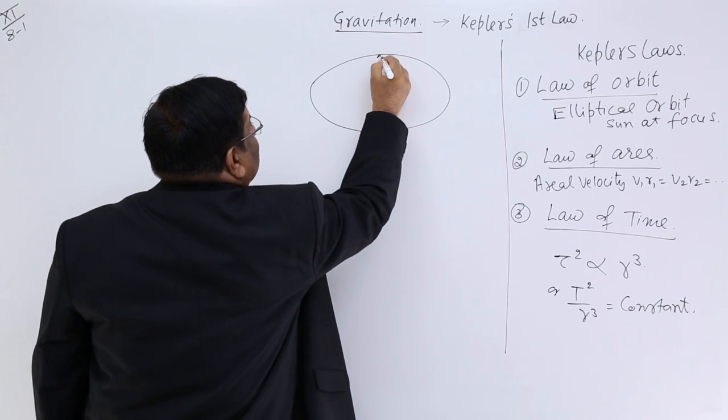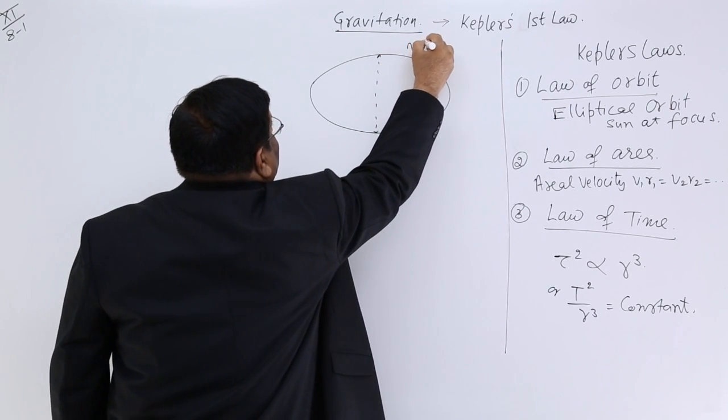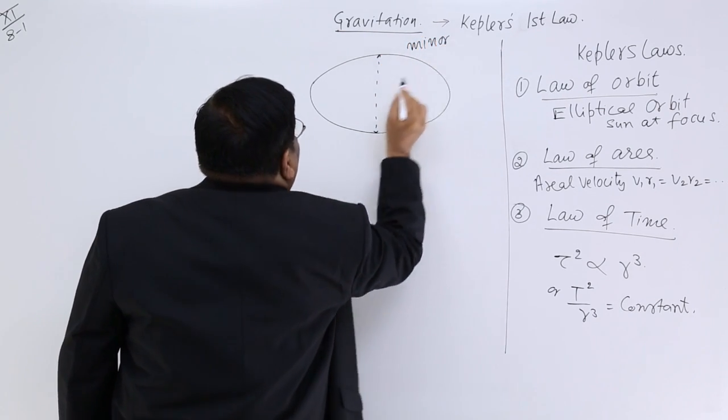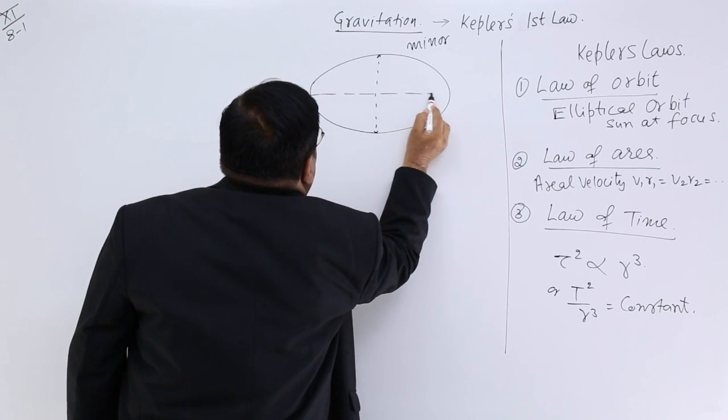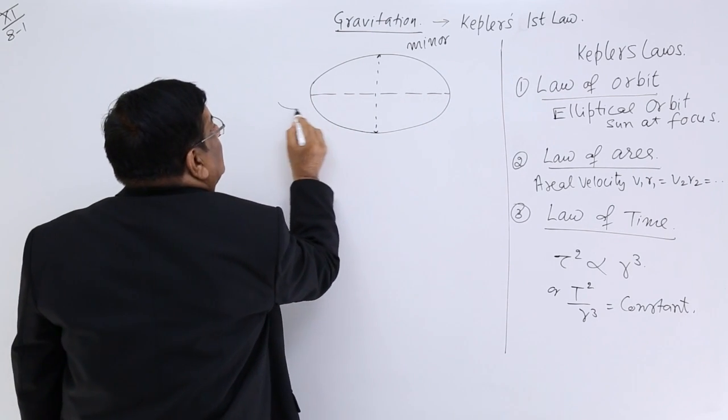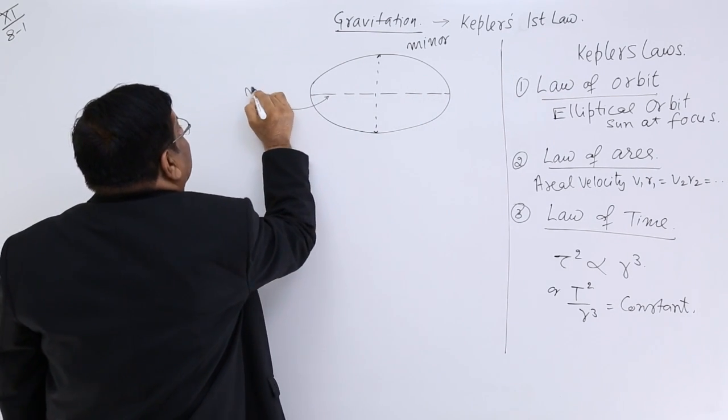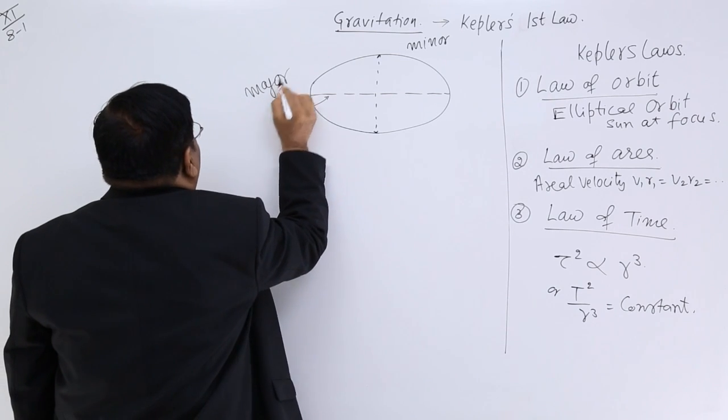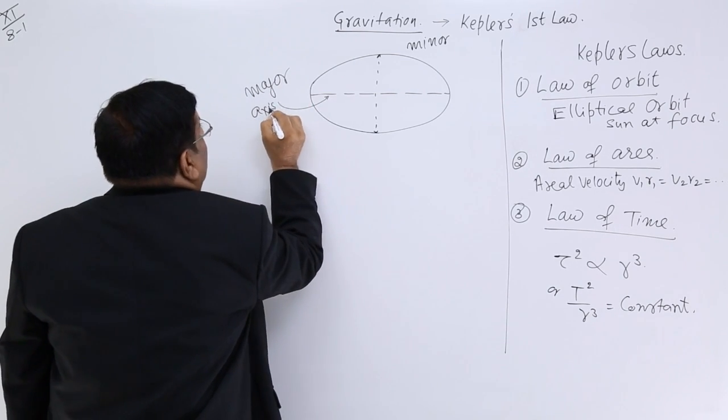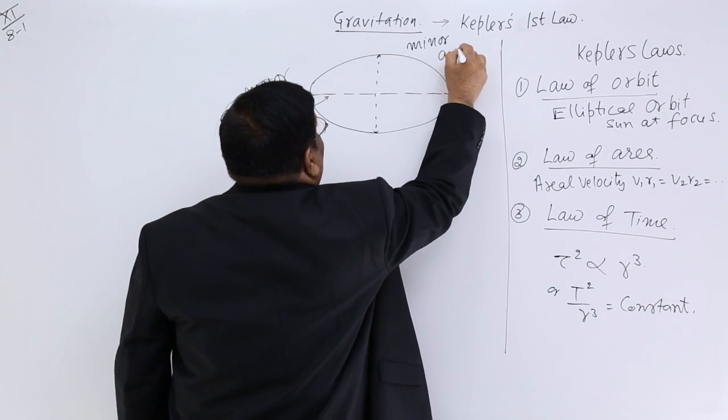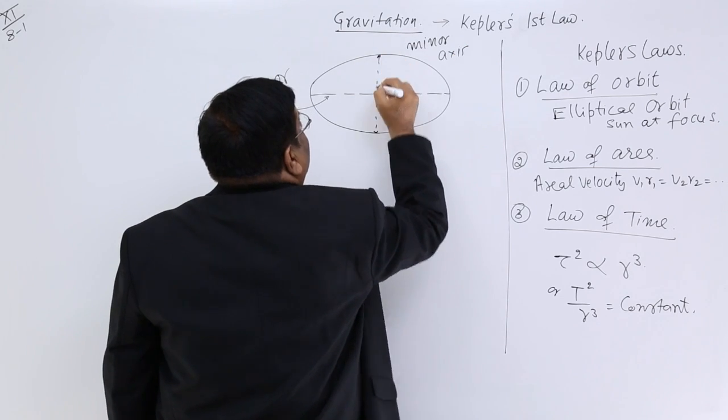This axis is known as the minor axis, and this axis opposite to it, this is known as the major axis. So, minor axis and major axis.